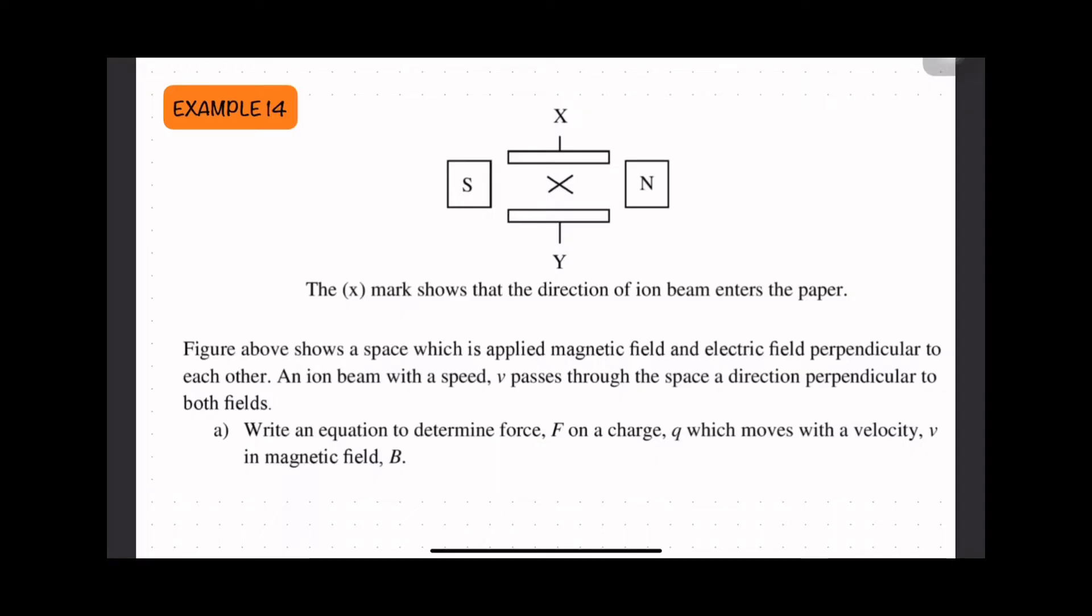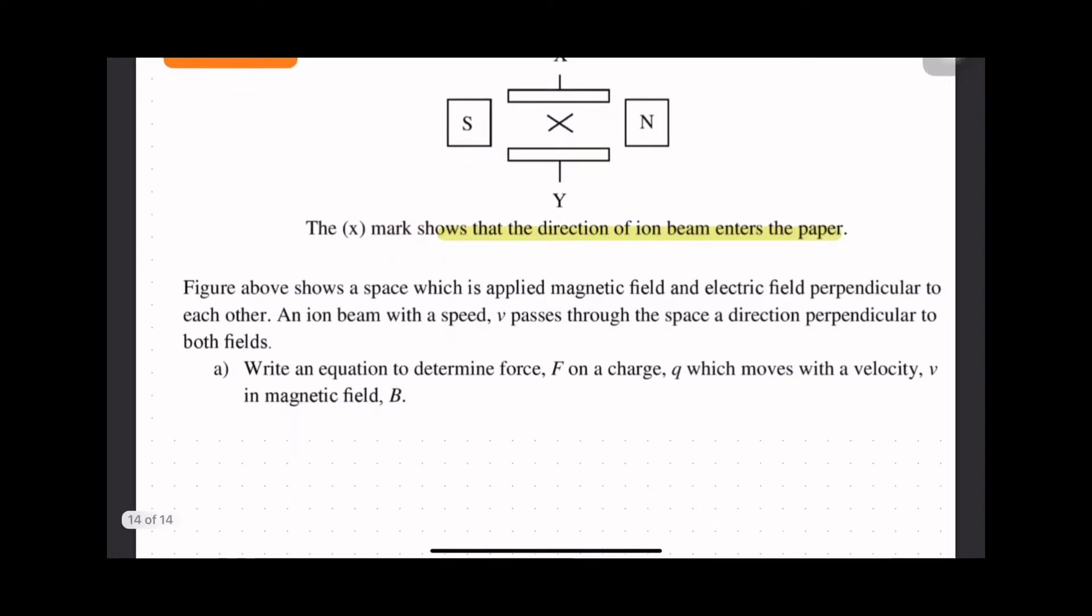Example 14: The X mark shows that the direction of the ion beam enters the paper. The figure above shows a space which is applied magnetic field and electric field perpendicular to each other. An ion beam with speed v passes through the space in a direction perpendicular to both fields.